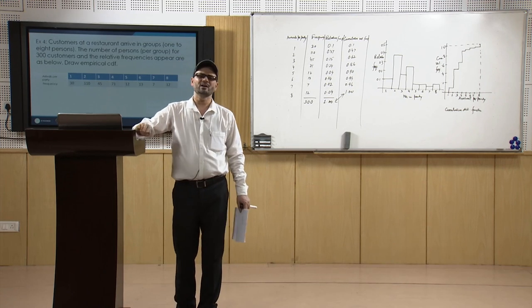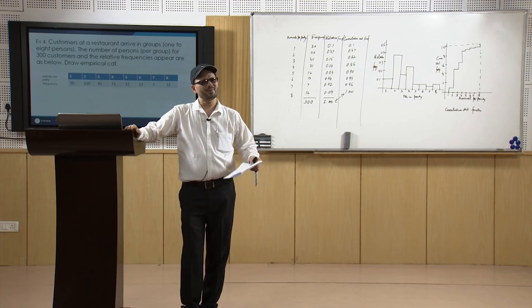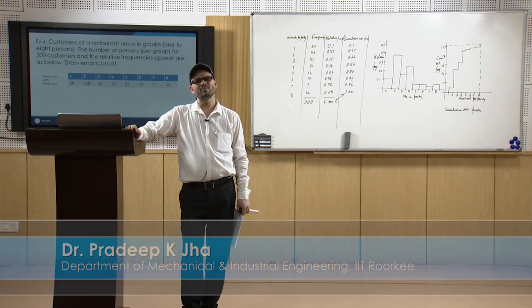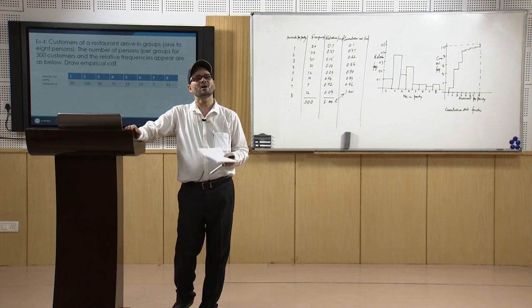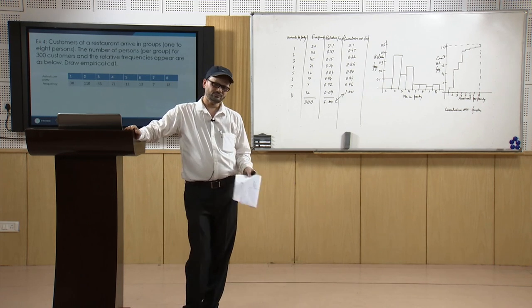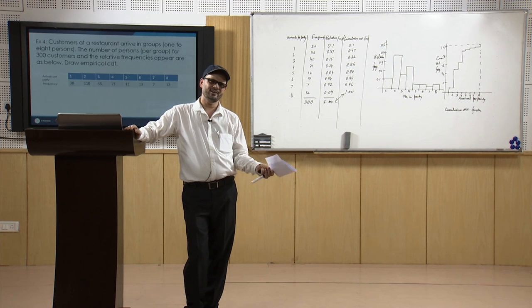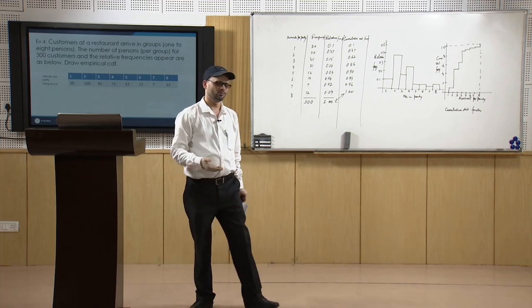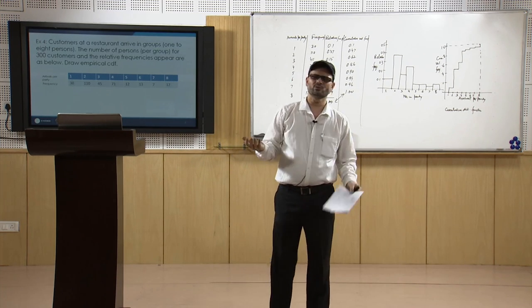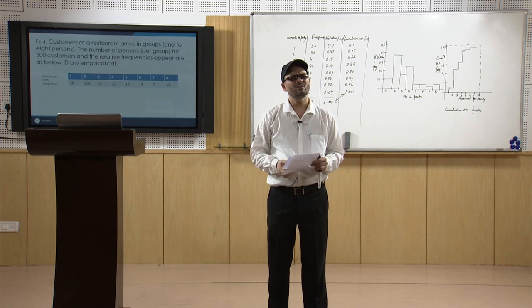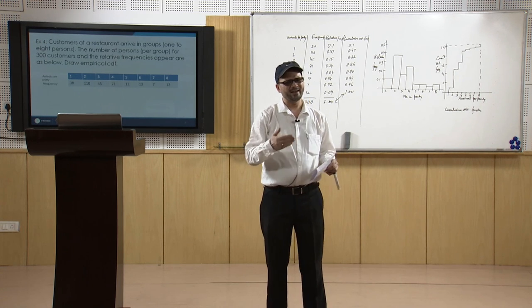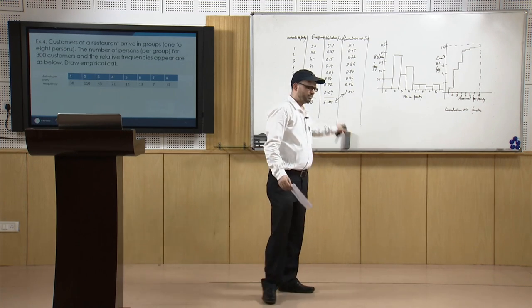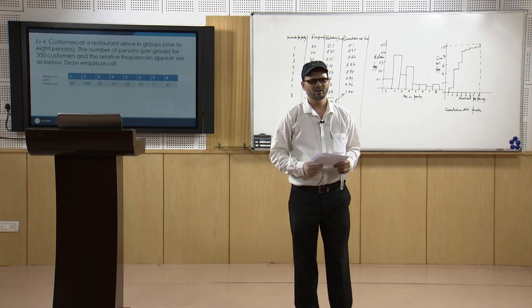We have discussed a few distribution function examples. There can be many cases — Bernoulli distribution, gamma distribution where parameters are given and events follow that distribution, and you have to find the desired values using the respective formulas. This is how you compute the required parameters in such cases. Thank you.